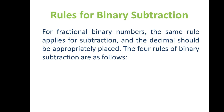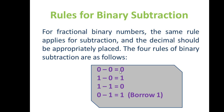The same rules apply for fractional binary numbers as well. The four rules of binary subtraction are as follows: 0 minus 0 equals 0; 1 minus 0 equals 1; 1 minus 1 equals 0; and 0 minus 1 equals 1, but by taking 1 borrow from the next higher digit.